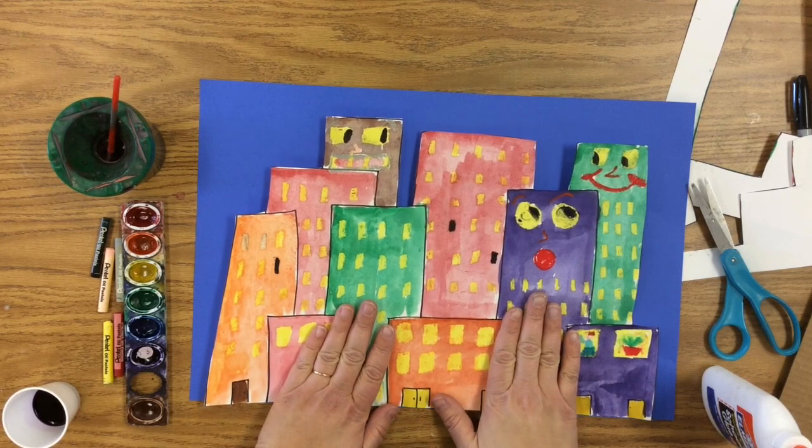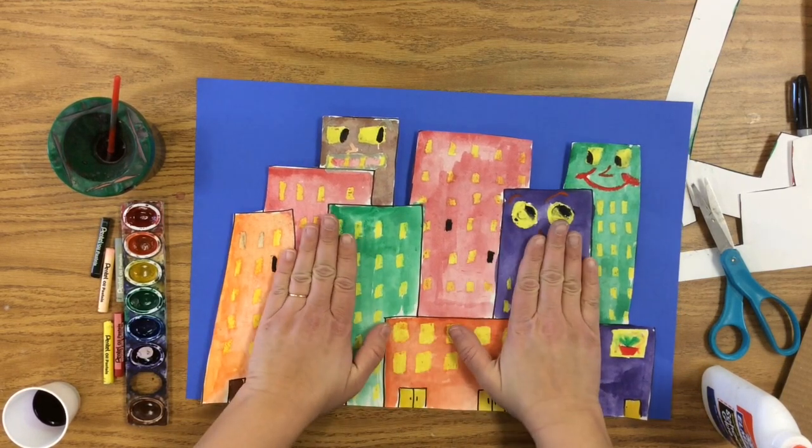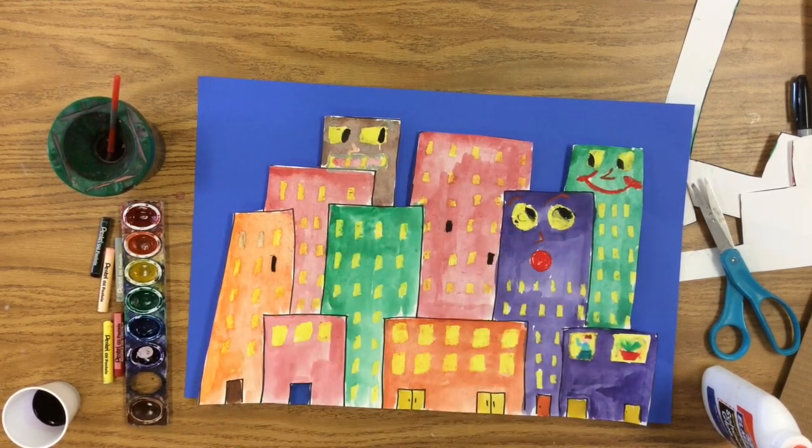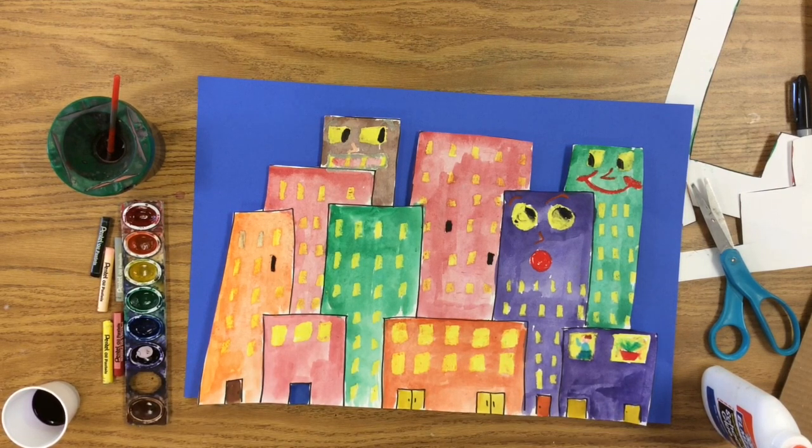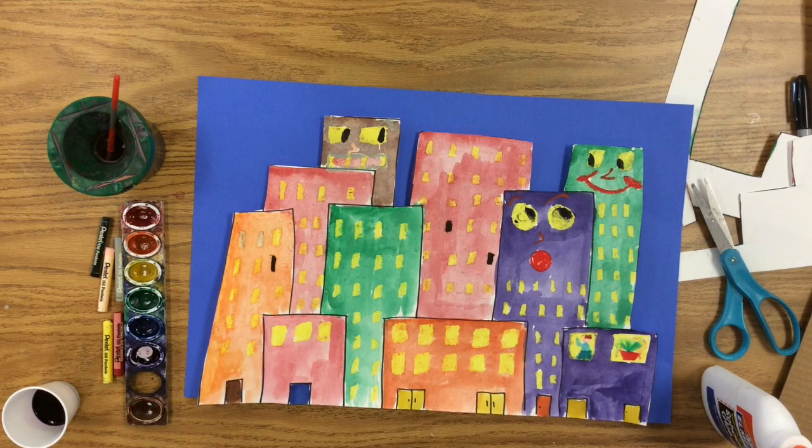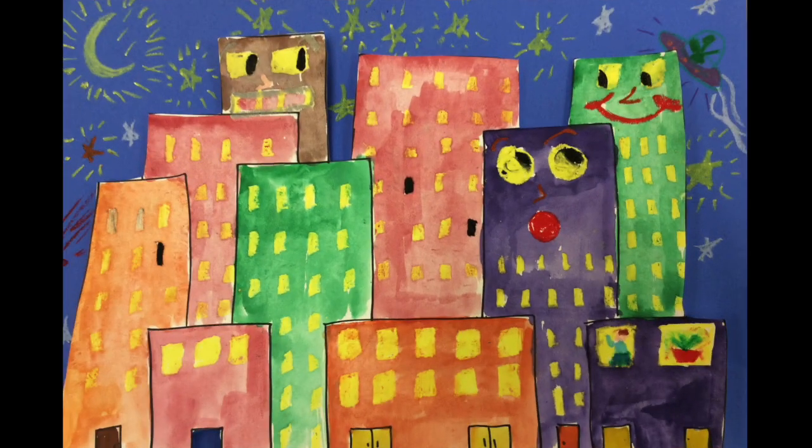If you have extra time, you can decorate your sky with all kinds of fun and interesting things that would go inside of the sky like birds and spaceships, moons and sun, stars, all kinds of cool stuff. Otherwise, this could also be done just like this. So here it is not decorated and here it is decorated.